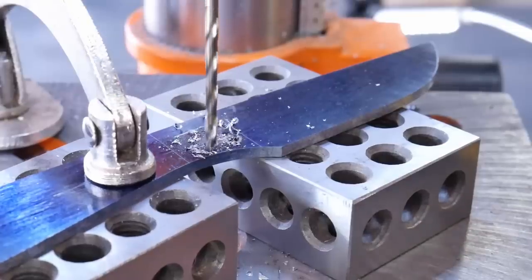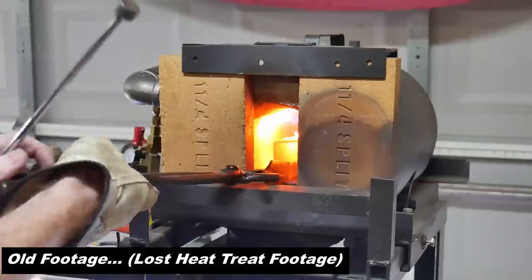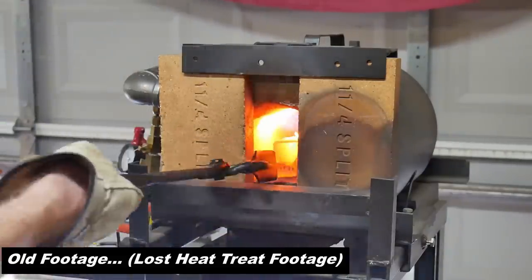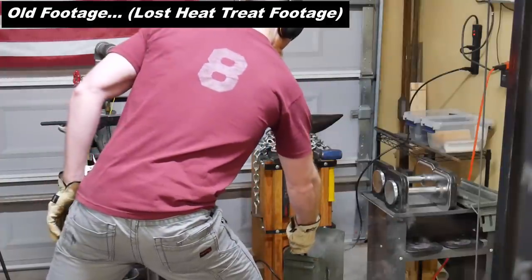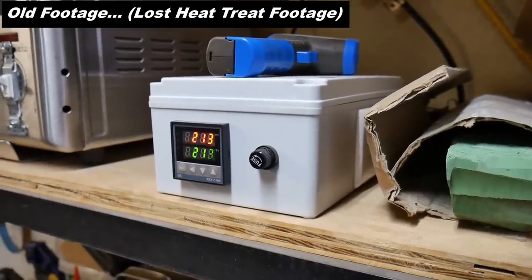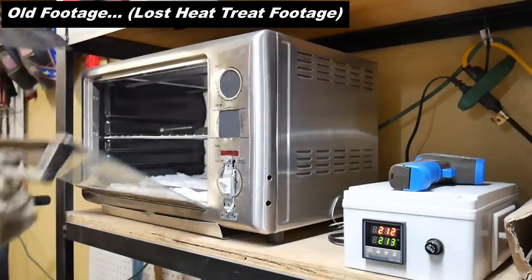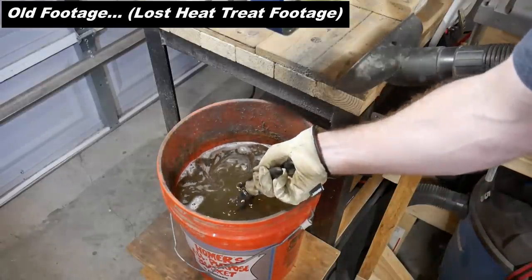We get this blade profiled and drilled, then we're going to move on to heat treat before grinding our bevels. I have a whole video on heat treating but I did lose the heat treating footage for this knife specifically. I went ahead and quenched it in Parks 50 and did two tempering cycles at 213 degrees Celsius for this knife. You can see that I'm pulling out the knife here and cooling it to room temperature before doing the second tempering cycle.